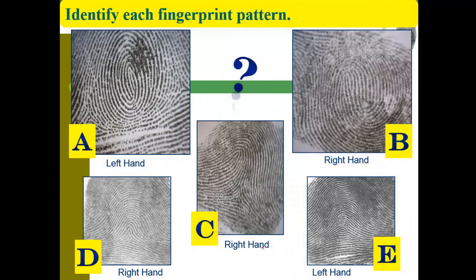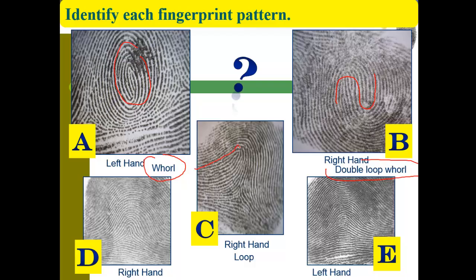When identifying each fingerprint pattern from examples: A shows circular loops — identified as a whorl. B shows looping up, back, and around in a yin-yang style — that's a double loop whorl. C moves up and back down to the same side — that's a loop. D has a sharp spike up and back down — that's a tented arch. E has a gradual rise and gentle slope back down — that's a plain arch.